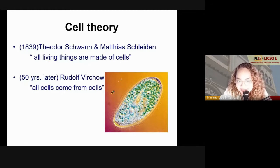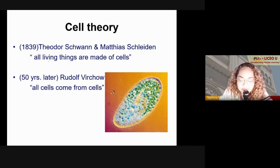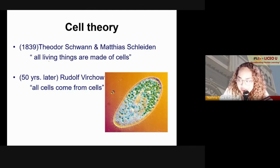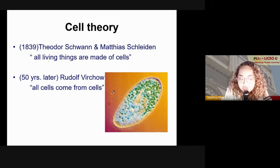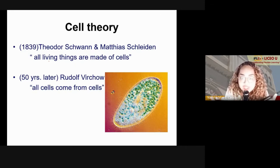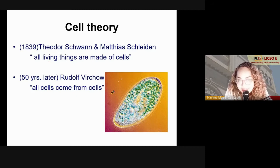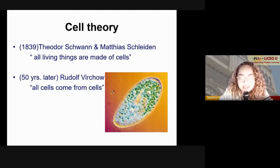About 50 years later, Rudolf Virchow was able to say that all cells come from cells. He definitively disproved the idea of spontaneous generation — the thinking that living things come from nothing. Rudolf Virchow contested that and finally stated that all cells come from cells.